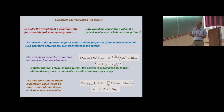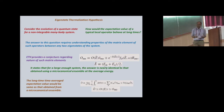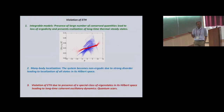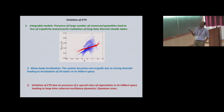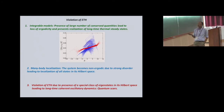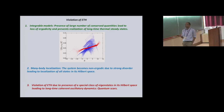So the basic property — if ETH holds — is that after some typical thermalization time, which depends on system time scales and details, the system gets into a thermal steady state. However, there are known examples of violation of ETH: one is for integrable models, where ergodicity is broken due to conserved quantities; another is many-body localized systems, where lack of ergodicity is due to strong disorder. But today I'm going to talk about violation of ETH due to the presence of a special class of eigenstates in the Hilbert space of the Hamiltonian, leading to long-time coherent oscillatory dynamics.